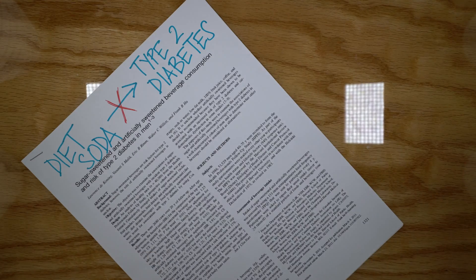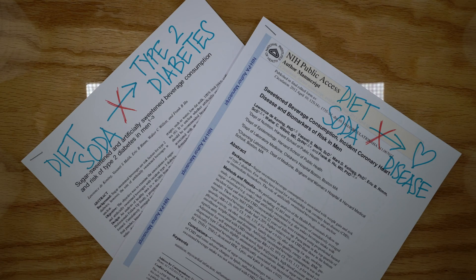However, there have also been other prospective cohort studies showing no association between diet soda consumption and risk of developing type 2 diabetes or coronary heart disease. Why are these associations so inconsistent?